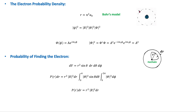This video is a brief description of the electron probability density. In Bohr's model of the hydrogen atom, the electron was visualized to revolve around the nucleus in a circular path of a definite radius.